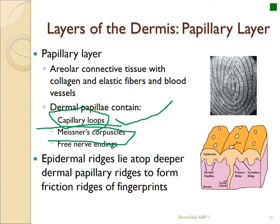Meissner's corpuscles in the papillary layer are for light touch, allowing delicate sensation. They are so sensitive that we cannot yet make robotic parts as sensitive as a Meissner's corpuscle. These are where you feel tickling, rubbing, and all sorts of fine sensitivities, allowing you to adjust your touch to the situation. There are also free nerve endings that feel pain, detect chemicals associated with damage like histamines, can feel pressures and excessive vibrations, and detect temperature changes — going from hot to cold.